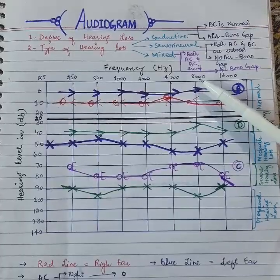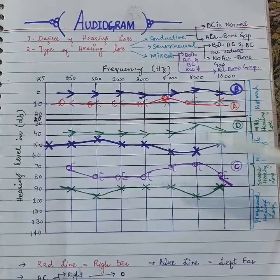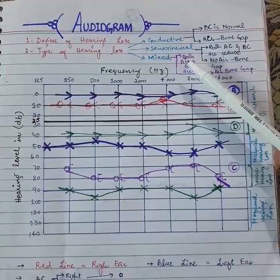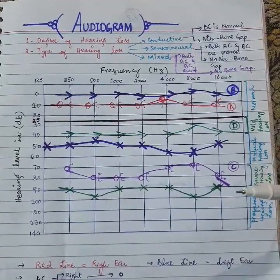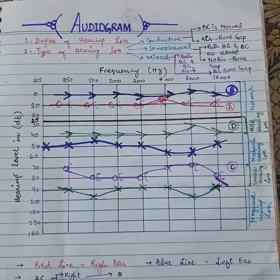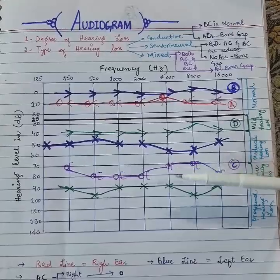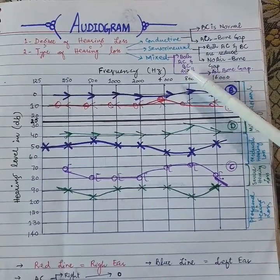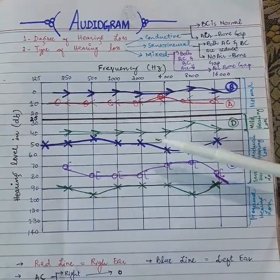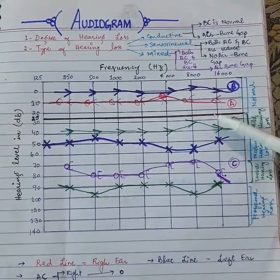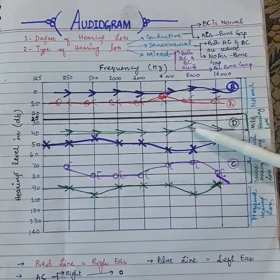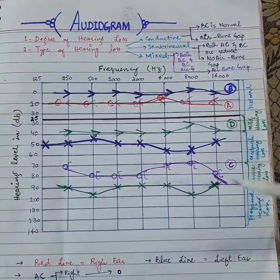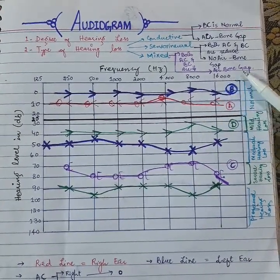Number three is mixed hearing loss. In this, one condition of conductive hearing loss is present and one condition of sensorineural hearing loss is present. First, both bone conduction and air conduction are reduced. We can see in graph D that bone conduction and air conduction are both below the level of 25dB, and there is an air-bone gap.